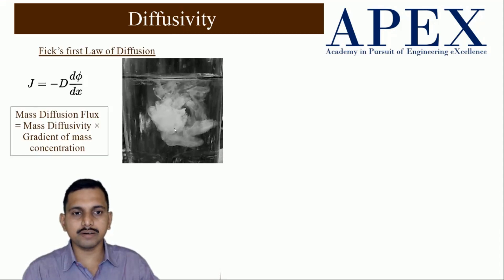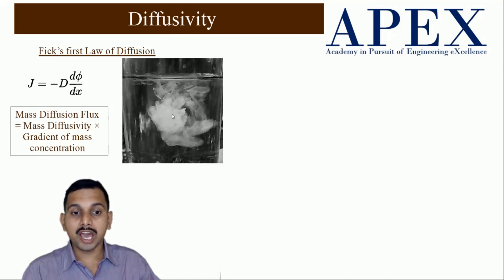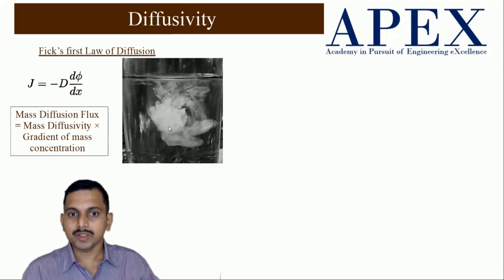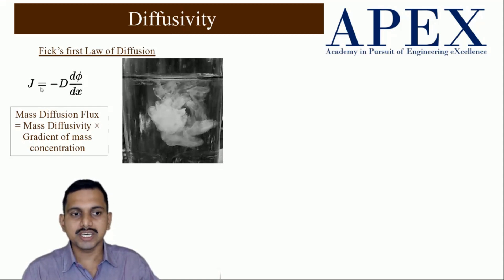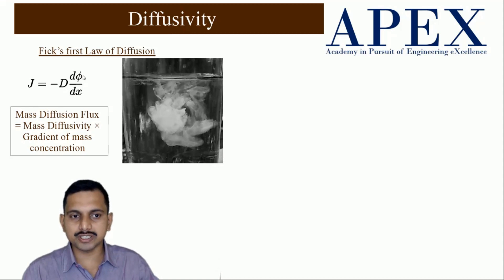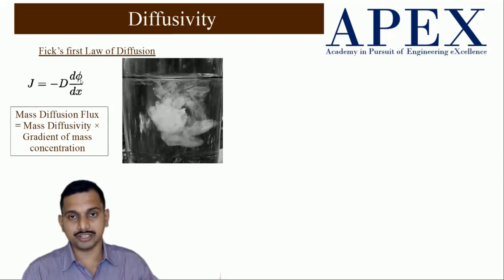The law that governs this diffusion process is called Fick's first law of diffusion. Here J is the mass diffusion flux — the amount of mass in kg crossing a particular surface per second per unit area. It is equal to mass diffusivity D multiplied by the gradient of concentration, d-phi by dx, where phi is the concentration.